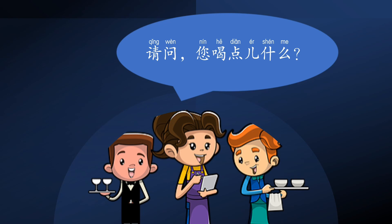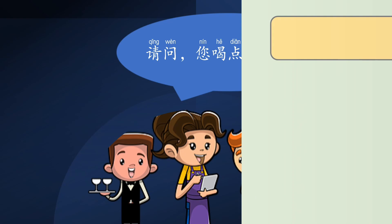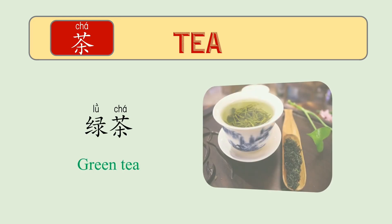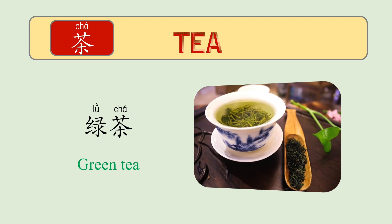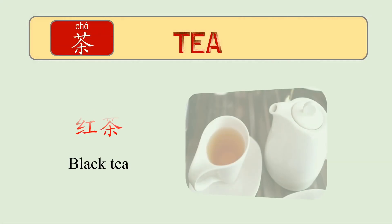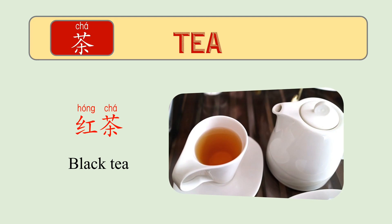Now let's look at different kinds of drinks. The most popular drink that Chinese people would think of is 茶 — tea. The first type is green tea, called 绿茶. Next is black tea, called 红茶. Literally 红 means 'red,' but 红茶 refers to black tea.